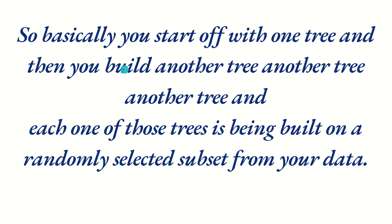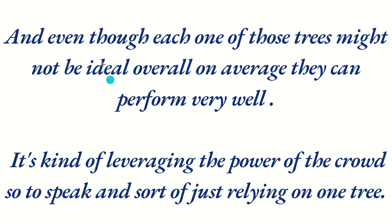In simpler terms: you start off with one tree, then build another tree, another tree, and so on. Each tree is built on a randomly selected subset from your data. Instead of taking the complete data, we take some part of it randomly — just like subsetting in R, where we select some part of the data, not all the data points.